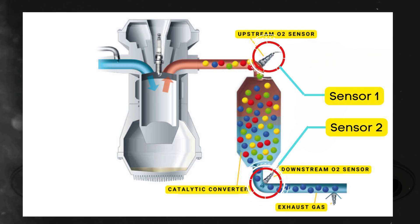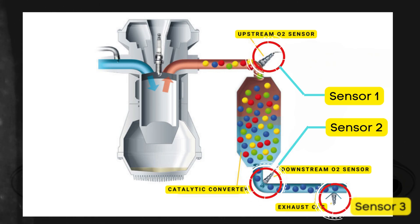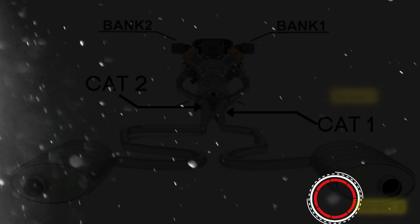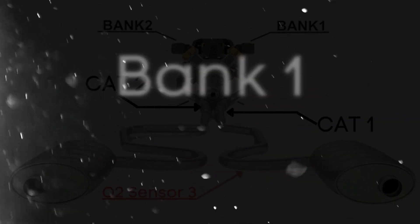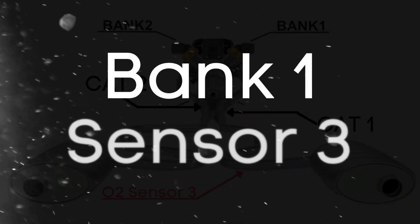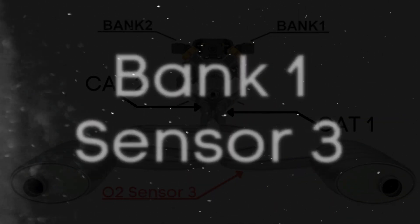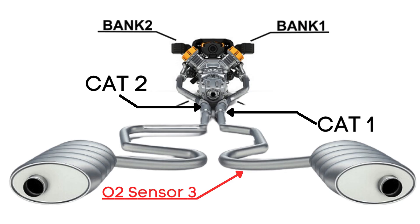In some cases, there might even be a third oxygen sensor further downstream, positioned after sensor 2. So when we talk about Bank 1 sensor 3, we're focusing on the third oxygen sensor that's downstream from the engine on Bank 1.